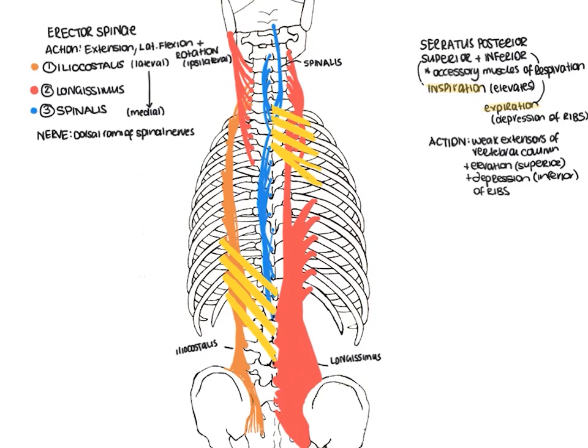This completes the session on the muscles of the back and the drawings that have resulted, going from the deep layers to the more intermediate layers. Above this, you would expect of course the latissimus dorsi, the rhomboids, the trapezius, and the other muscles in this region. Thanks for joining us and bye for now.